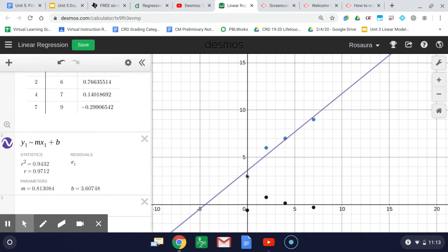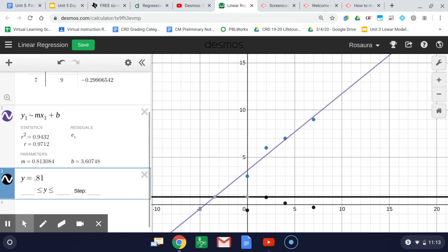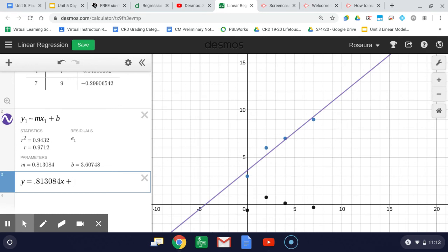This is pretty strong data, and if you were to write this as an equation, it would be y equals 0.81384x plus b, which is 3.60748. As you can see, that's the equation for the line that was just drawn.